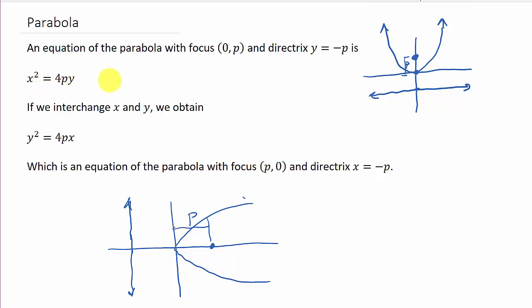Another way to write these when the vertex is at 0, 0—if we look at it, x minus h squared equals 4p times y minus k, and then here we would have y minus k squared equals 4p times x minus h. And the vertex would be h, k. All right, so let's go ahead and take a look at an example.